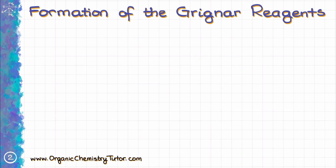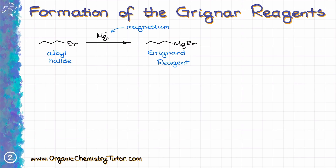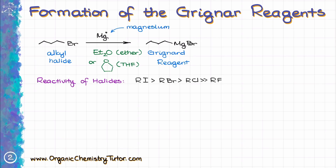Before we jump into the discussion of the Grignard reaction and Grignard reactivity, let's talk about how we make the Grignard reagent itself and what exactly it is. We make the Grignard reagent by reacting an alkyl halide with magnesium shavings in an anhydrous ether or tetrahydrofuran. From the reactivity perspective, the iodine and bromine containing halides are the most reactive. Chlorides are okay but not the best choice, and fluorides are comparatively unreactive so you'll never see those in your course.